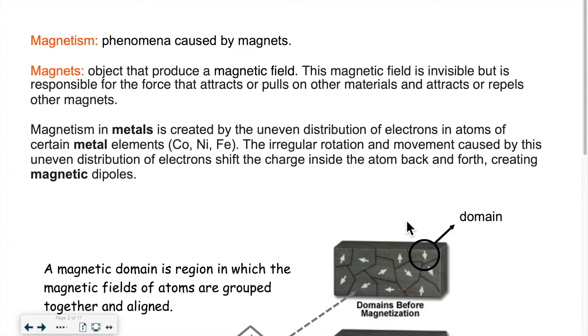What are magnets? Well those are objects that produce what we call a magnetic field. This magnetic field is invisible, but it's a force that attracts or pulls on other materials and can also attract or repel other magnets. If you have two magnets nearby each other, they may attract or repel depending on how they are oriented. But if you're dealing with one magnet and another substance that is not a magnet, it's possible that it will be attracted, but it will never be repelled.